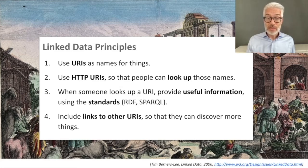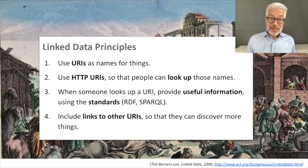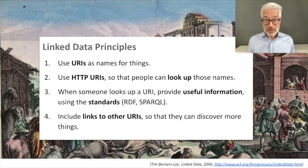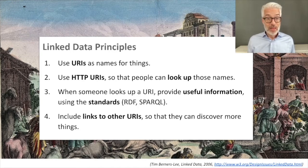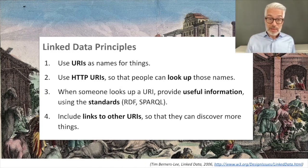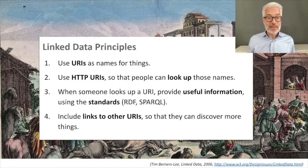These URIs should provide meaningful information. If a human looks it up, they get HTML. If a machine looks it up, it gets useful information using web standards like RDF or SPARQL — this is linked data principle number three. And most importantly, to enable discovery, the data you have put on the web will be linked to other data on the web, so you can follow connections, find connections, and foster explorability. These four principles are the linked data principles, which are essential for the web of data.